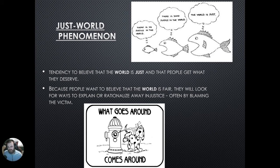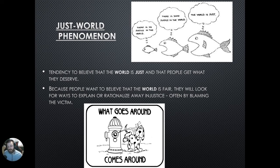Another area of social psychology related to attributions is the Just World Phenomenon — the tendency to believe the world is just and fair and that people get what they deserve. We believe this to rationalize away injustices, often sadly by blaming the victim. You might say somebody got what was coming to them because of how they were acting. You can also take a look at the picture memes provided to get a good idea of this concept.